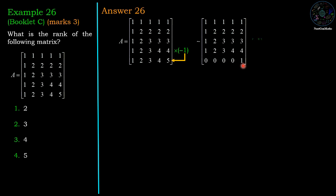Now multiply 3rd row by minus 1 and add to the corresponding entries of 4th row. Then we have 0, 0, 1, 1.